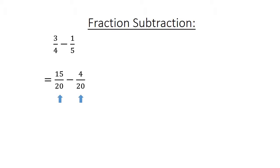Fraction subtraction. Find the lowest common multiple. 15 over 24 minus 4 over 24 equals 11 over 24.